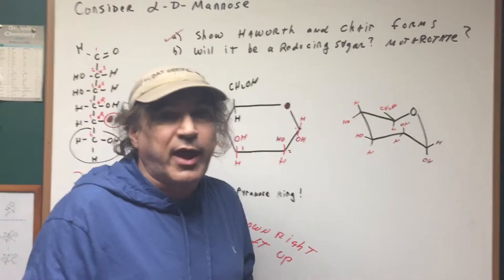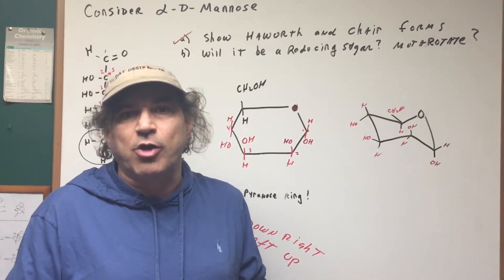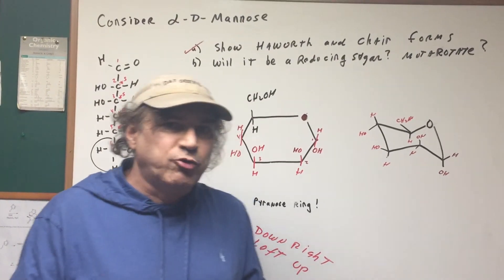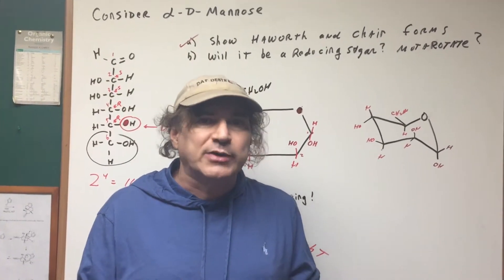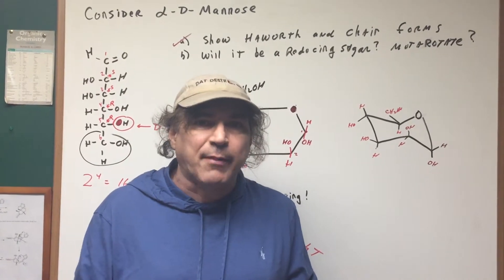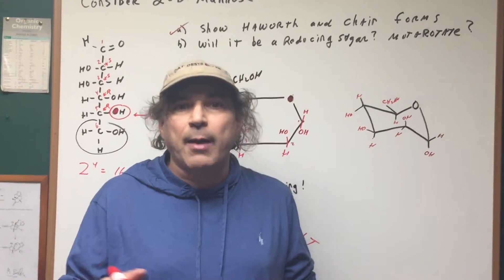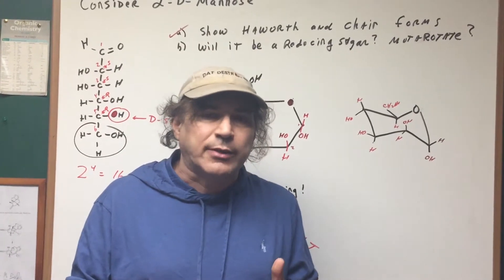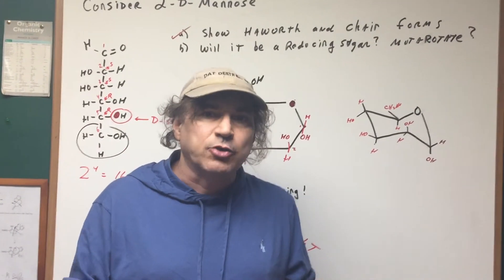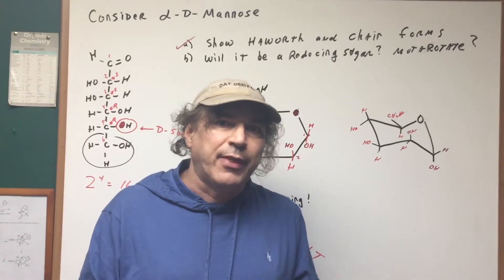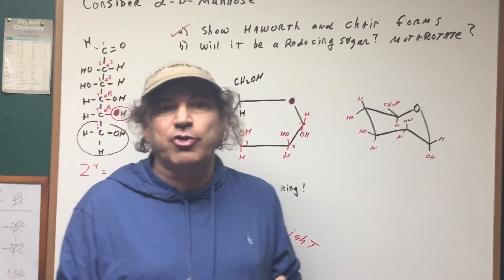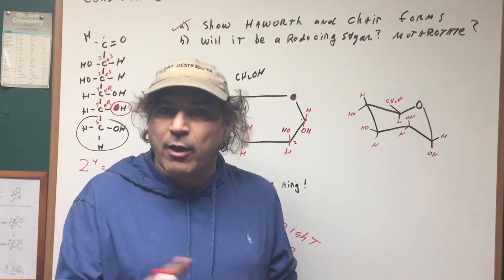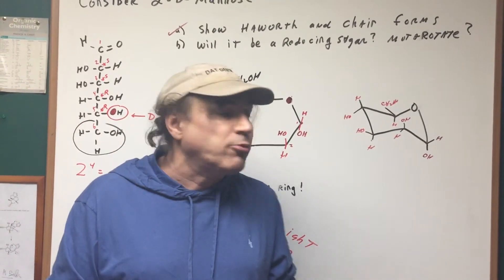Yes, it would undergo mutarotation. If it's a reducing sugar, it will undergo this phenomenon called mutarotation, which means if you had a pure sample of, say, the alpha isomer, and you placed it in solution, and you come back a few hours later, what would happen is you would see that the rotation changes to an equilibrium value, and this change in the rotation over time to establish the equilibrium between the open chain and the alpha and beta forms is called mutarotation.